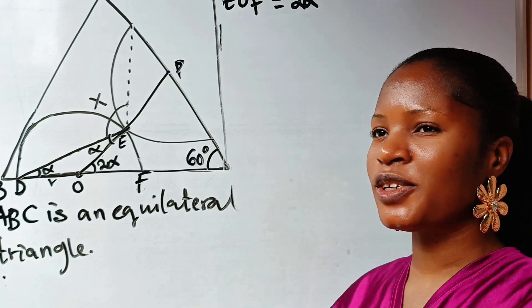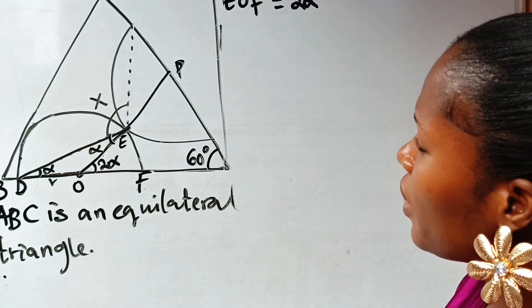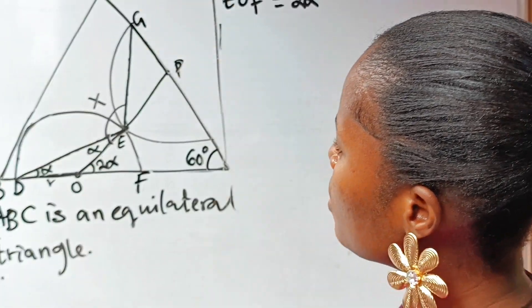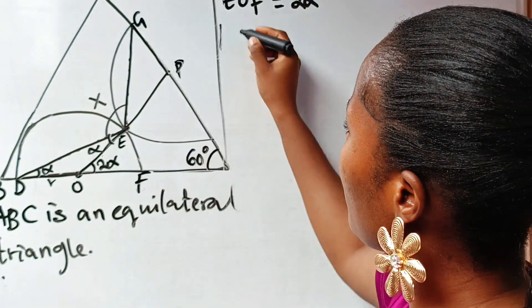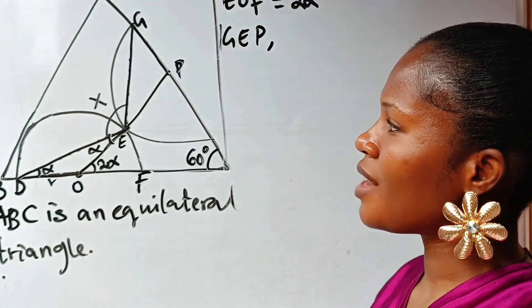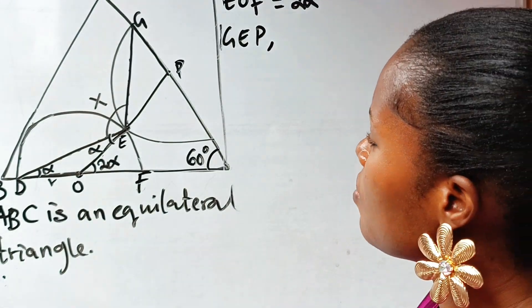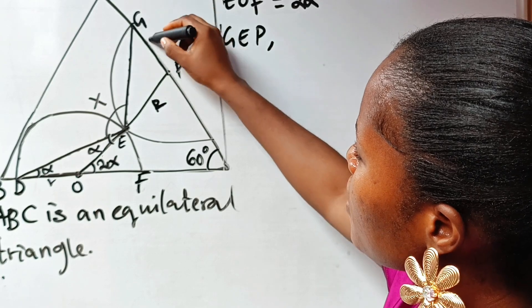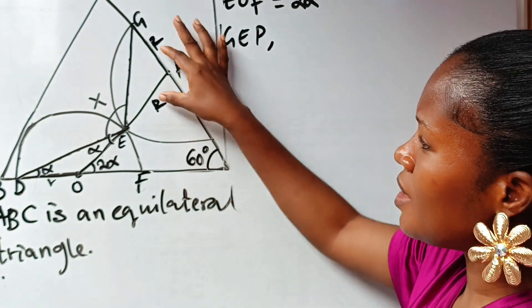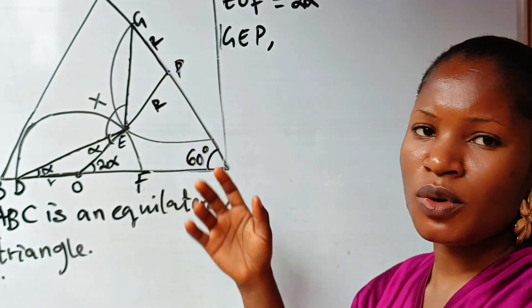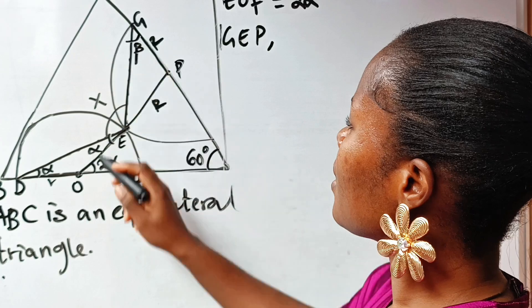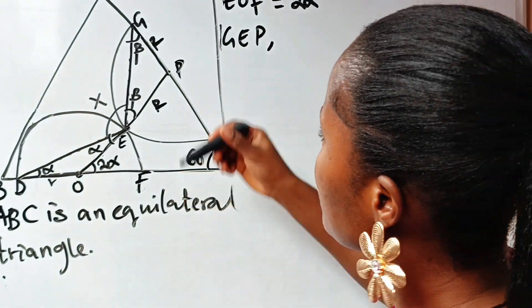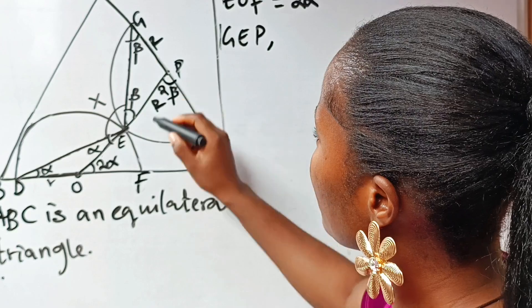Now looking at this drawing, let's consider this particular triangle — let's call this point G. Triangle GEP is also an isosceles triangle, because EP is the radius r of this circle, and from G to here is also r. So the base angles must be equal — if we call this angle beta, this other base angle is also beta. Using the external angle theorem, angle at P is also two beta.